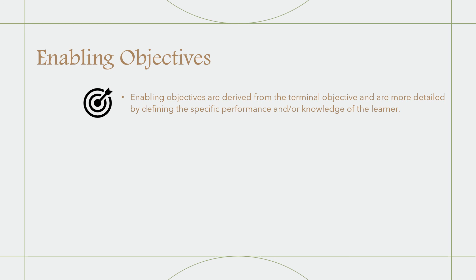Enabling objectives need to state the expectations of the learner's performance and define the skills, knowledge, and behaviors students will need in order to be considered masters of the lesson. They need to address a component of the terminal objective and help track student progress. Enabling objectives should outline the lesson plan and follow the steps necessary for a student to gain a new skill and knowledge that helps them reach the performance level the teacher has set for them to achieve.